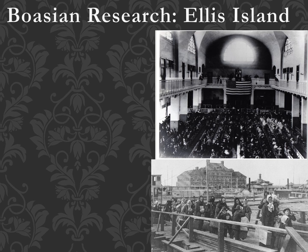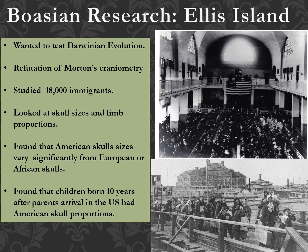Boas set out to test Darwinian evolution and refute Samuel Morton's notion of craniometry — that particular races have uniform cranial and skeletal measurements. Boas knew from his own studies of native North Americans that there is a huge variety even within a given race in terms of skeletal proportions. He wanted to refute the notion that race itself is not biological but rather a social construct.